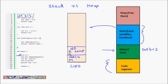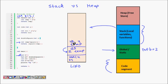Inside double_square, with argument z, we call square(z). So square is now pushed onto the stack with argument x. It makes a temp variable, calculates, returns temp, and comes back to double_square. So this temp inside square is evaluated and when it returns, the square stack frame is popped off.